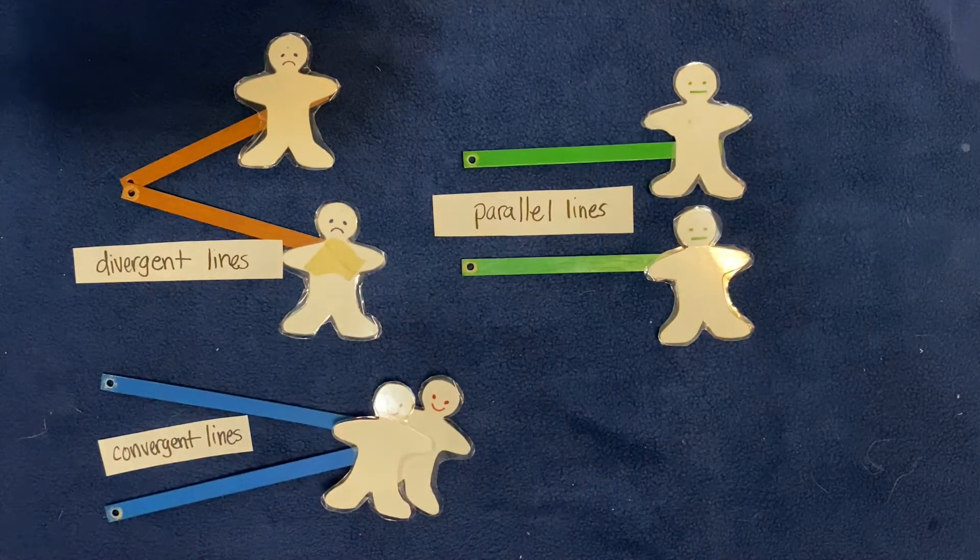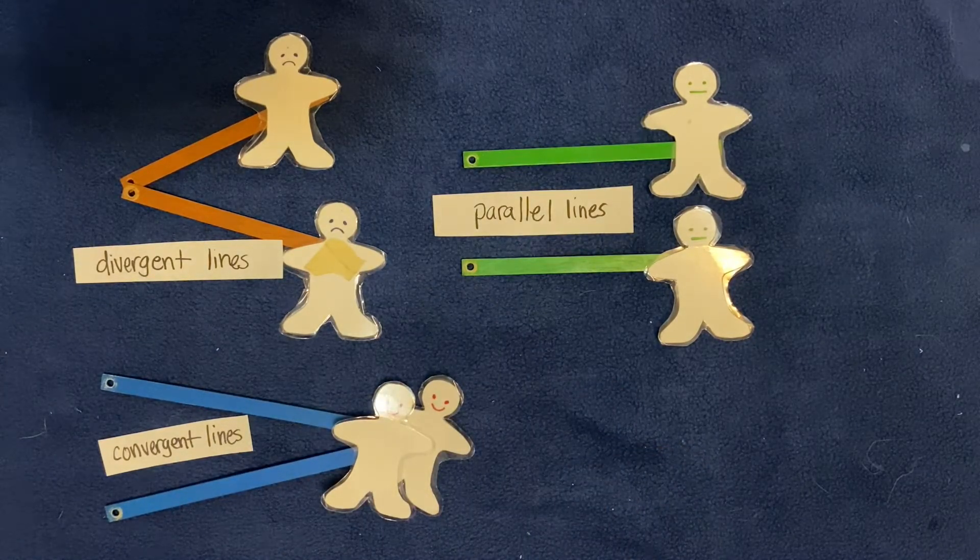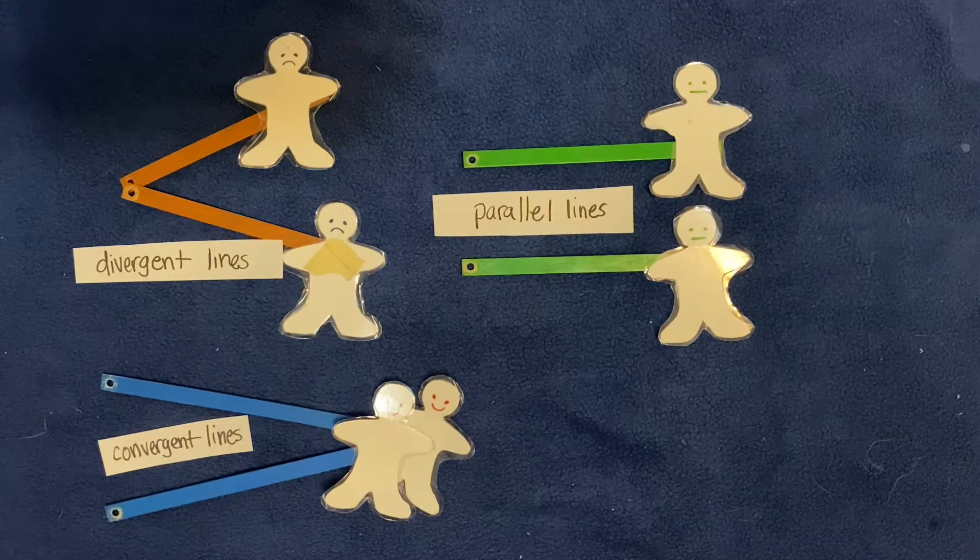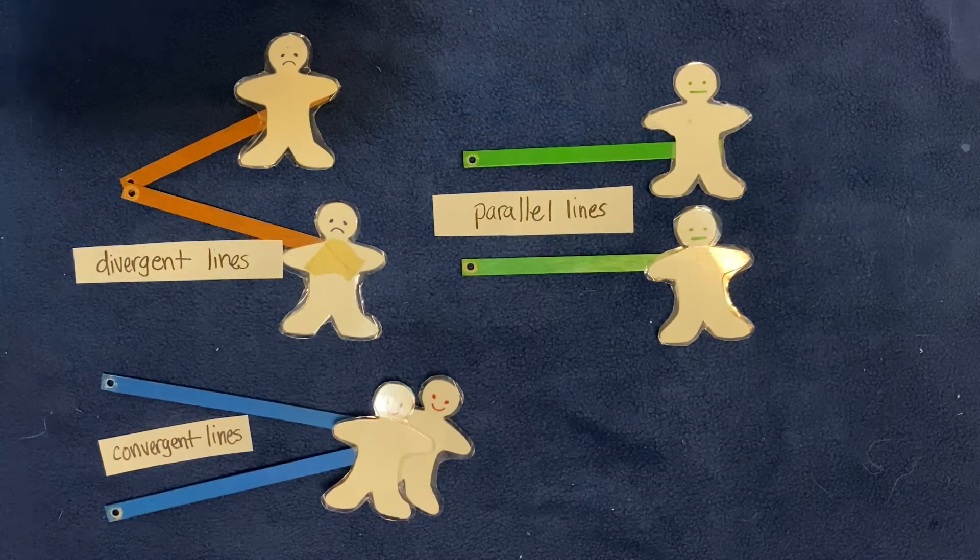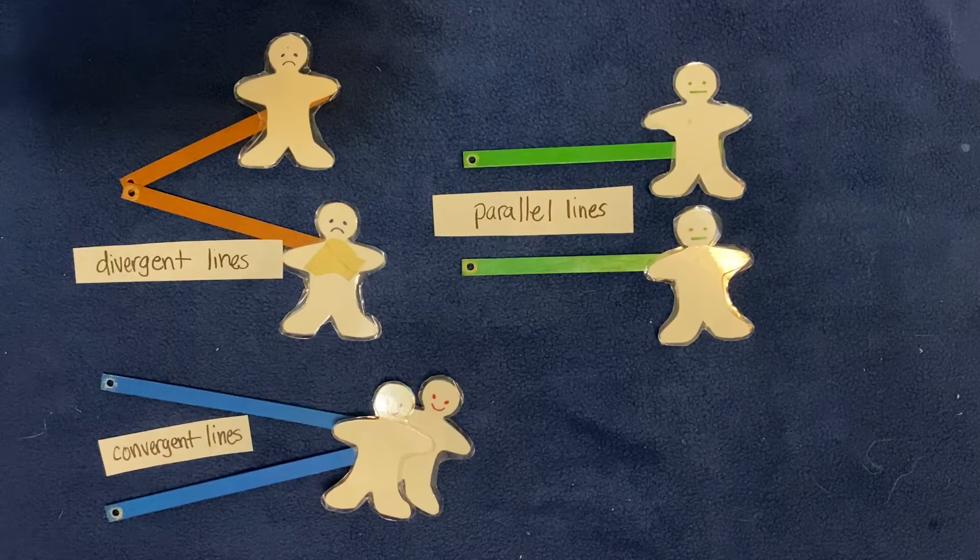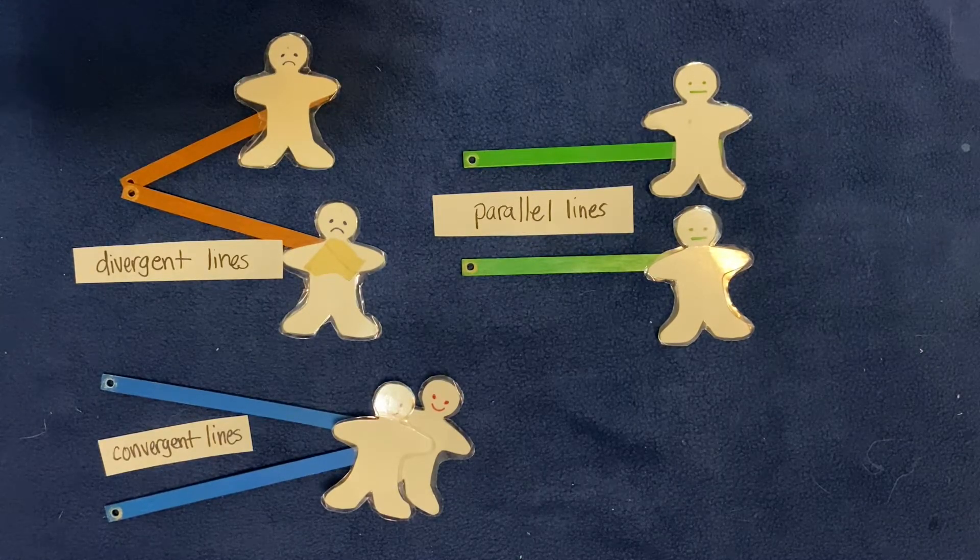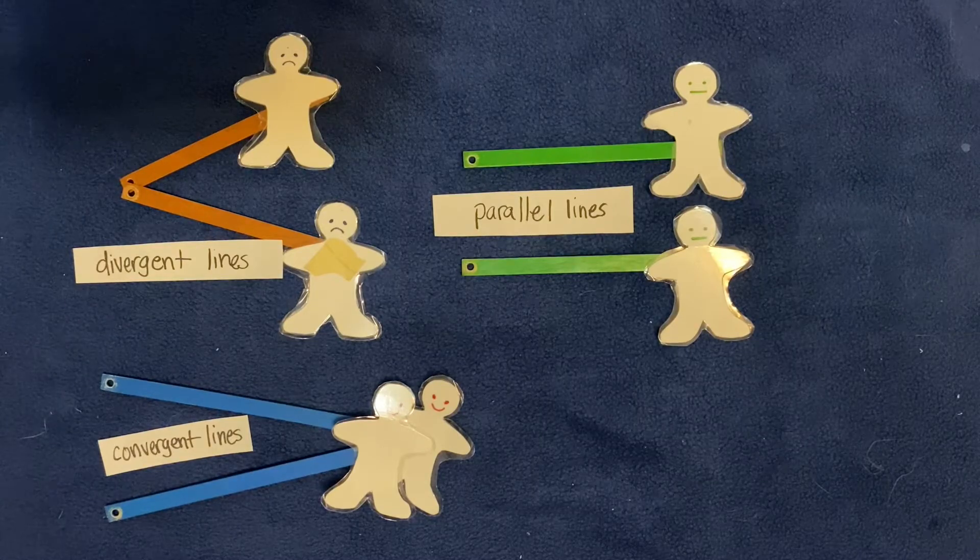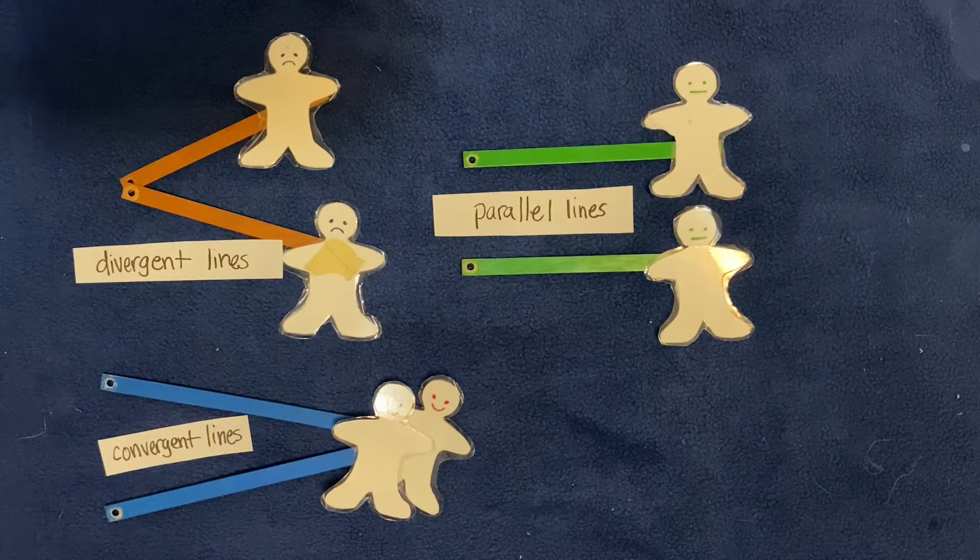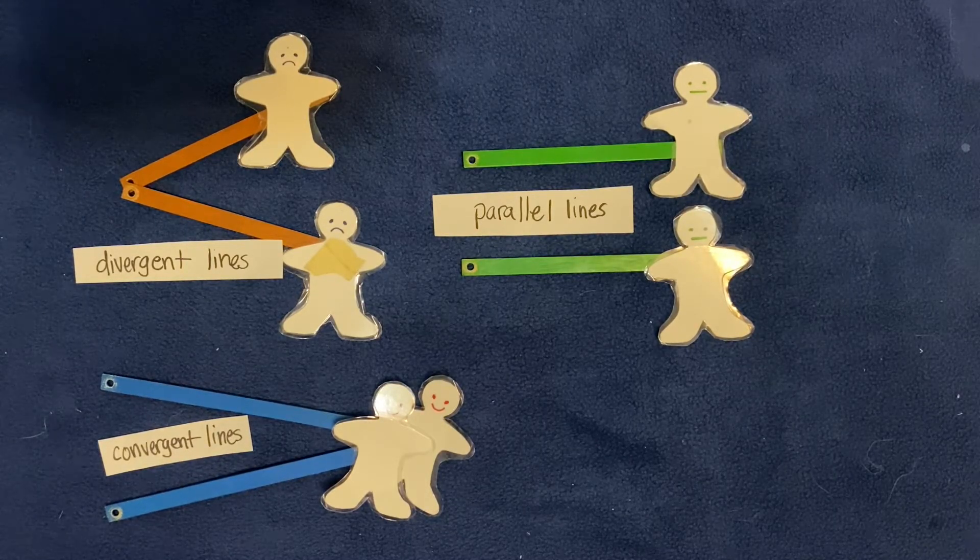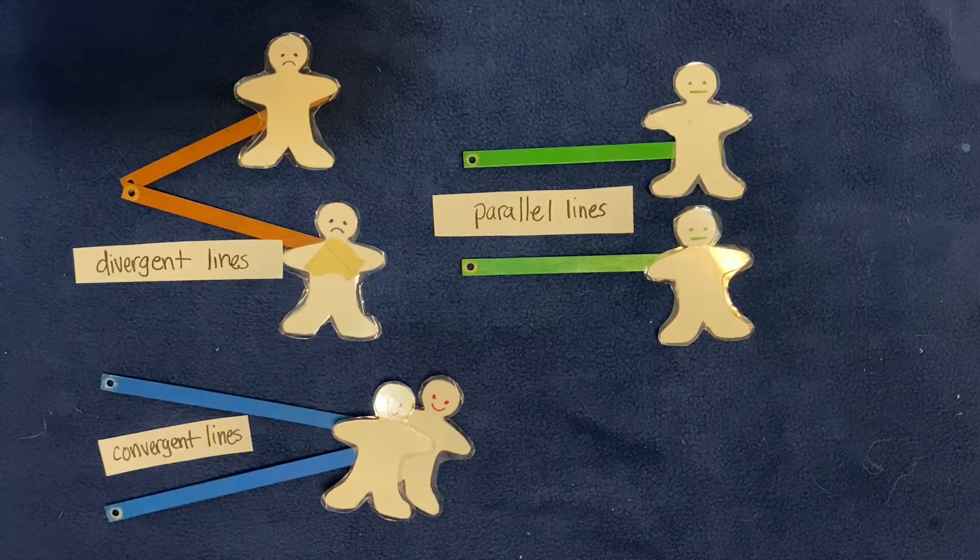So these are three different kinds of lines. I want you to think of where you see different convergent, divergent, and parallel lines in your life. Maybe in nature, maybe on the street when you're driving, maybe in your house, or how can you make a piece of artwork that shows each one of these in a different way?